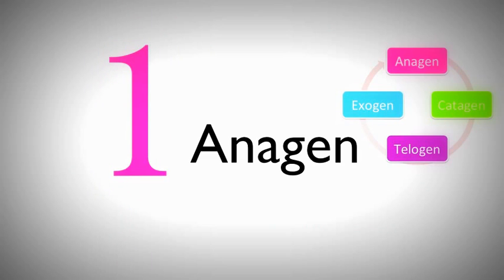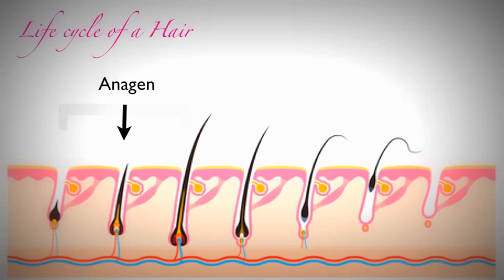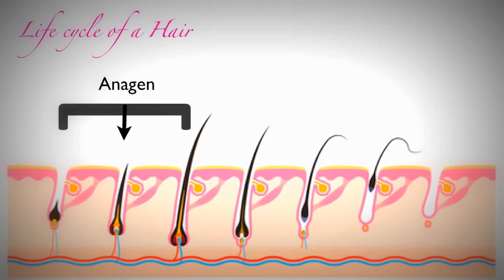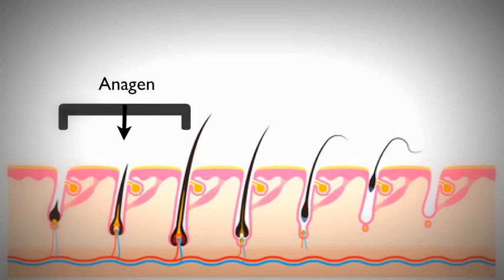Anagen, the first stage, is where our hair grows. This skin diagram shows the life cycle of a single hair. If you look at the skin diagram closely, you can see that anagen is the only phase where the root is receiving nutrition from the blood supply. Our hair spends most of its time in this phase — anywhere from 80 to 90% of your hair is currently in an anagen growing phase.